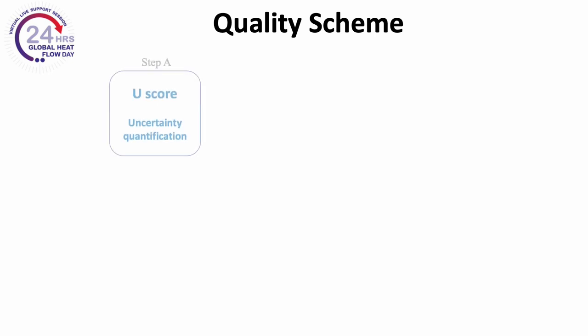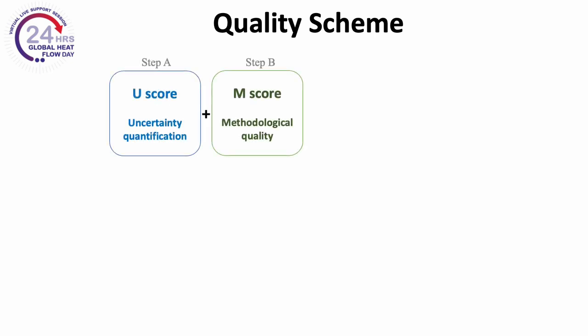As you see here, the quality scheme is made up of three parts: an uncertainty score, U; a methodology score, M; and a consideration of perturbation effects, which are stored in the database as flags. The three different scores represent different quality aspects: numerical uncertainty of the input data, reliability of the technical measurement methods, and assessment of the local site conditions.